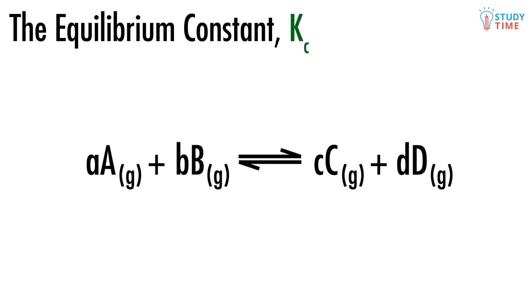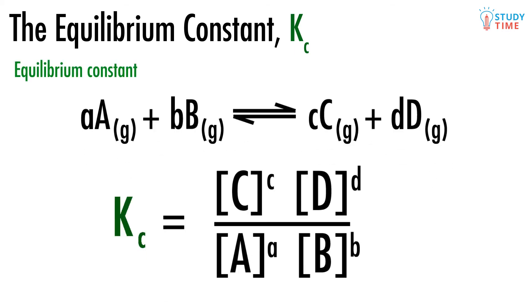For example, if this little a were a 2, we would have 2 moles of chemical A. We can now take this and form something called an equilibrium constant, which we shorten simply to K sub C.